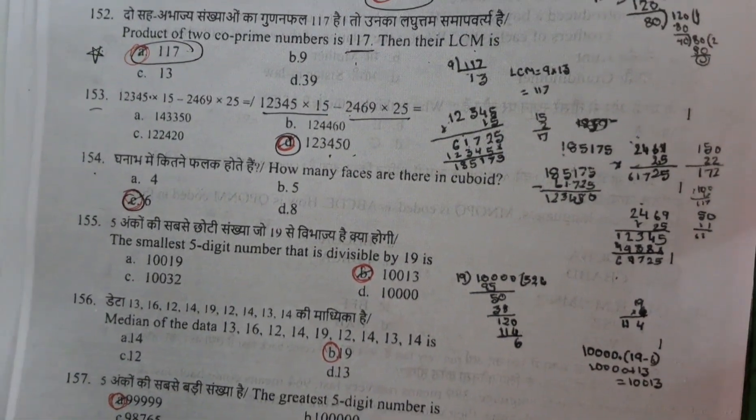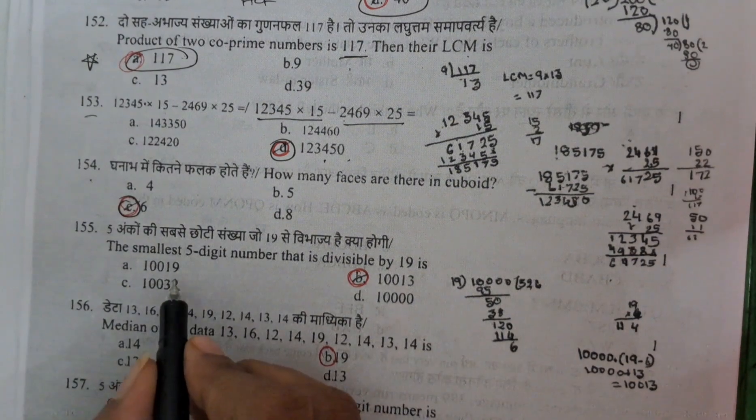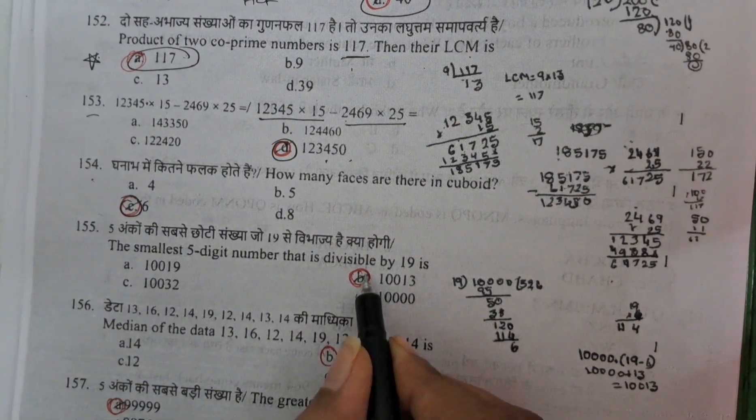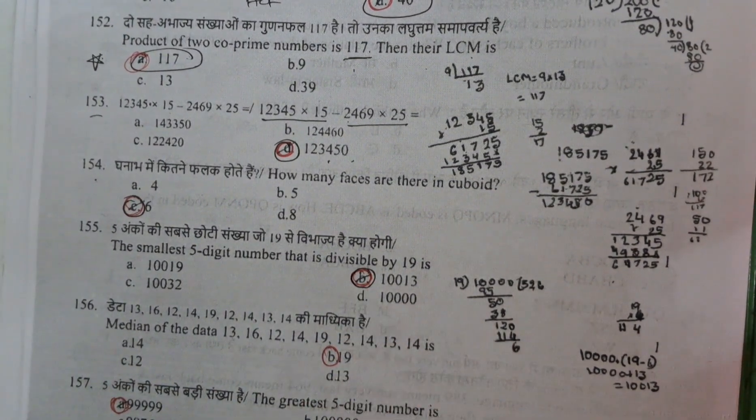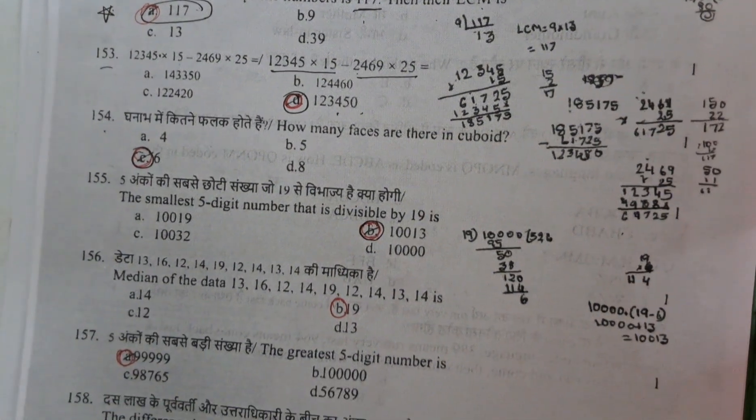Cuboid having always 6 faces. For cube, cuboid, this is a solid figure always having 6 faces: top and bottom and 4 walls. And the smallest 5 digit number that is divisible by 19. The number should be divisible by 19, that should be the smallest. The answer will be 10013.